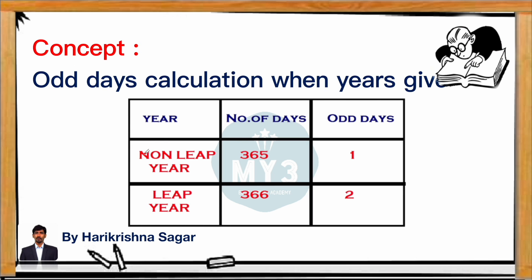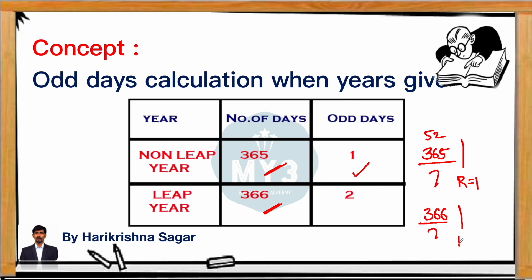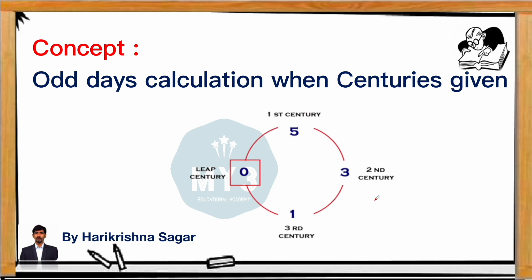Similarly, odd days calculation for years. A leap year has 366 days and a non-leap year has 365 days. For 365 days divided by 7, we get remainder 1, so a non-leap year has 1 odd day. For a leap year, 366 days gives remainder 2, so a leap year has 2 odd days. Remember: leap year has 2 odd days, non-leap year has 1 odd day.